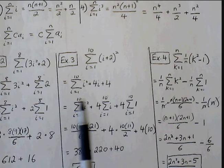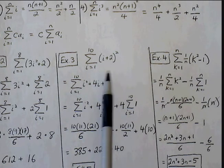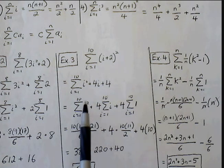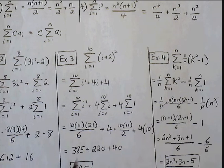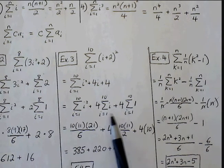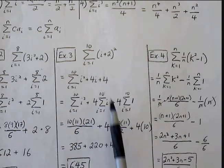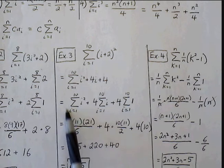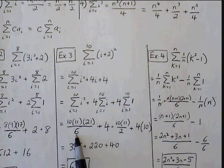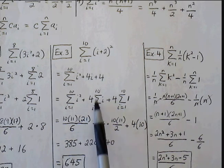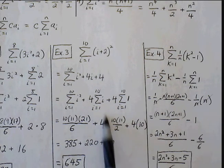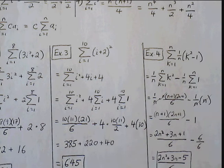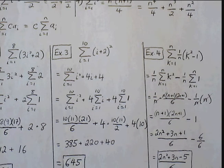Example 3: summation from 1 to 10 for (i plus 2) squared. We can't split this up yet. We need to foil: i squared plus 4i plus 4. Now I'll rewrite as 3 separate sums: summation of i squared, summation of 4i with the 4 pulled in front, and summation of 4 with the 4 pulled in front. Now I'll make a clean substitution. Replace with the third rule: n times n plus 1 times 2n plus 1 over 6. Finally this gets replaced with n. My n value is 10, so 4 times 10. Combine all this: 385 plus 220 plus 40 gives 645.